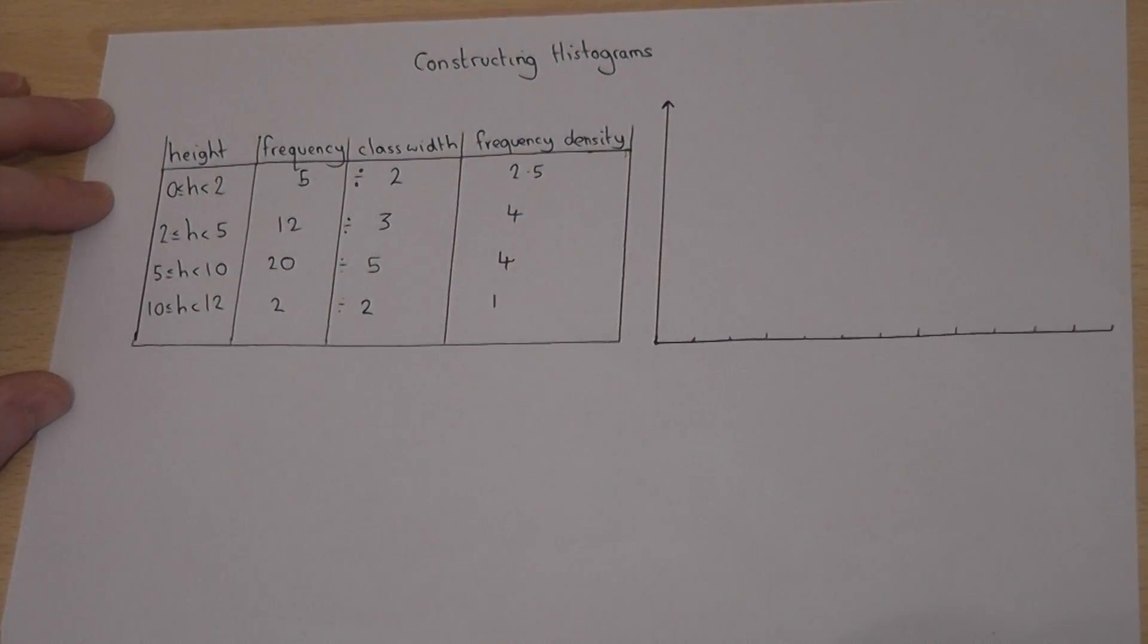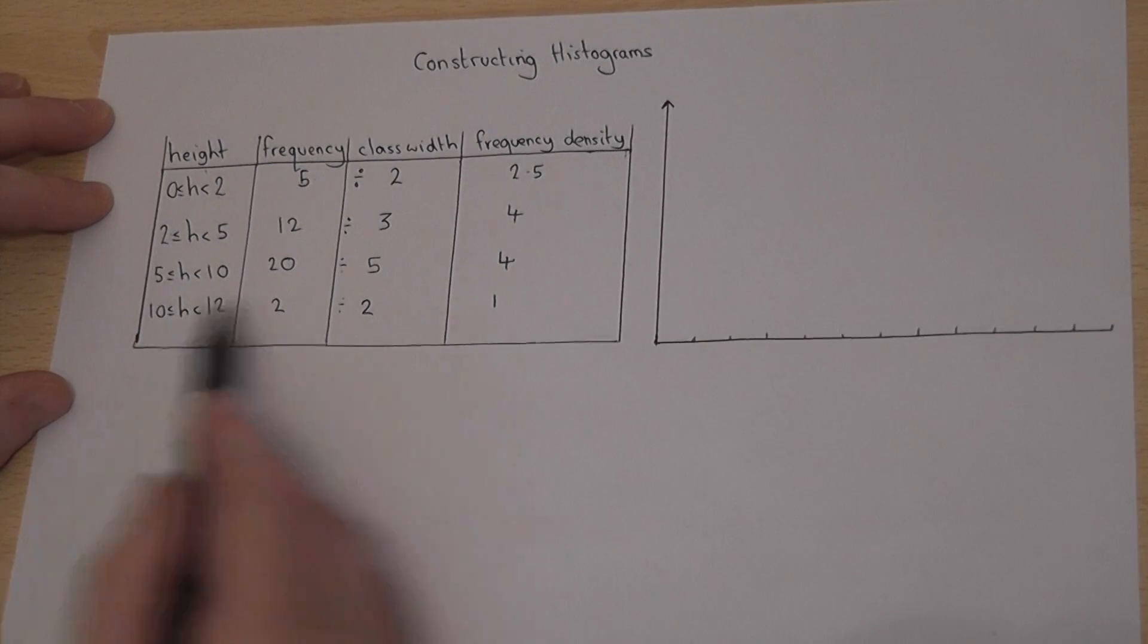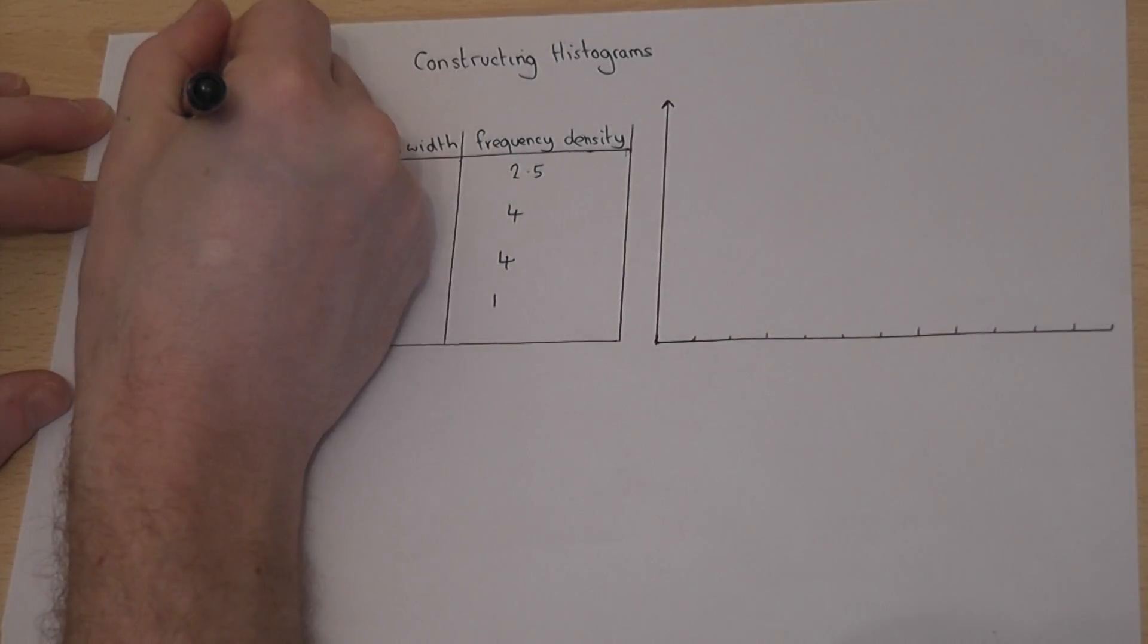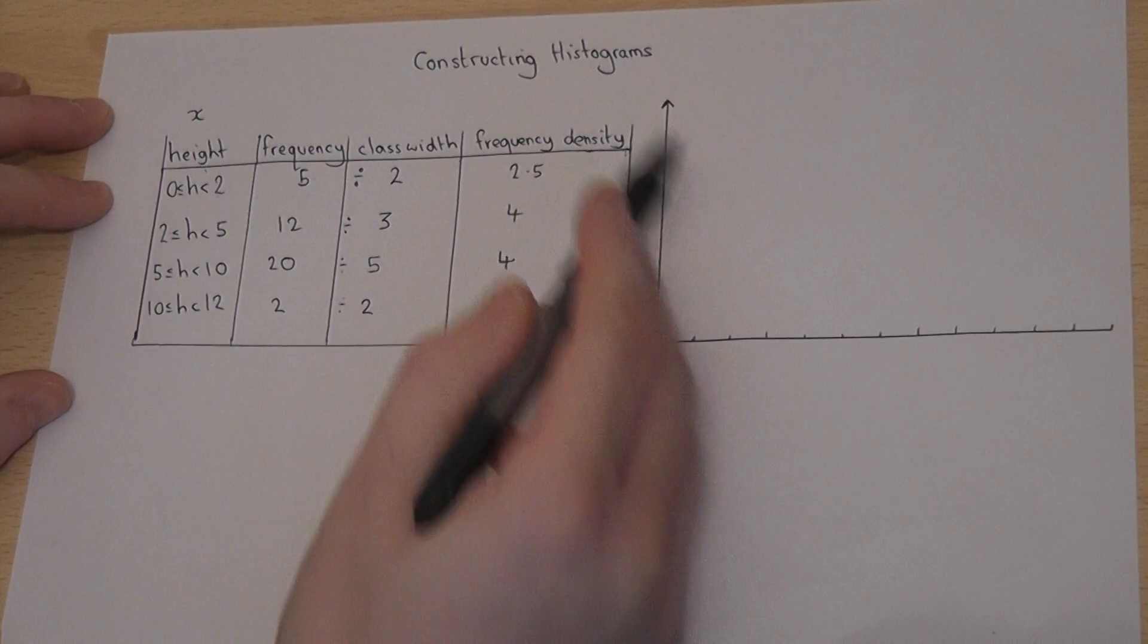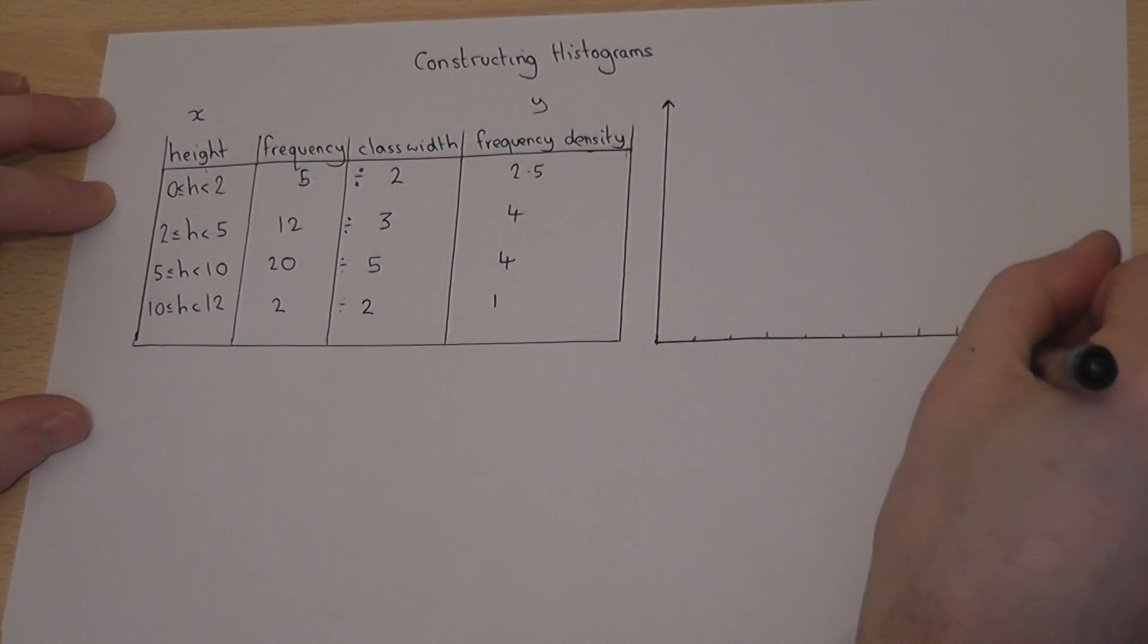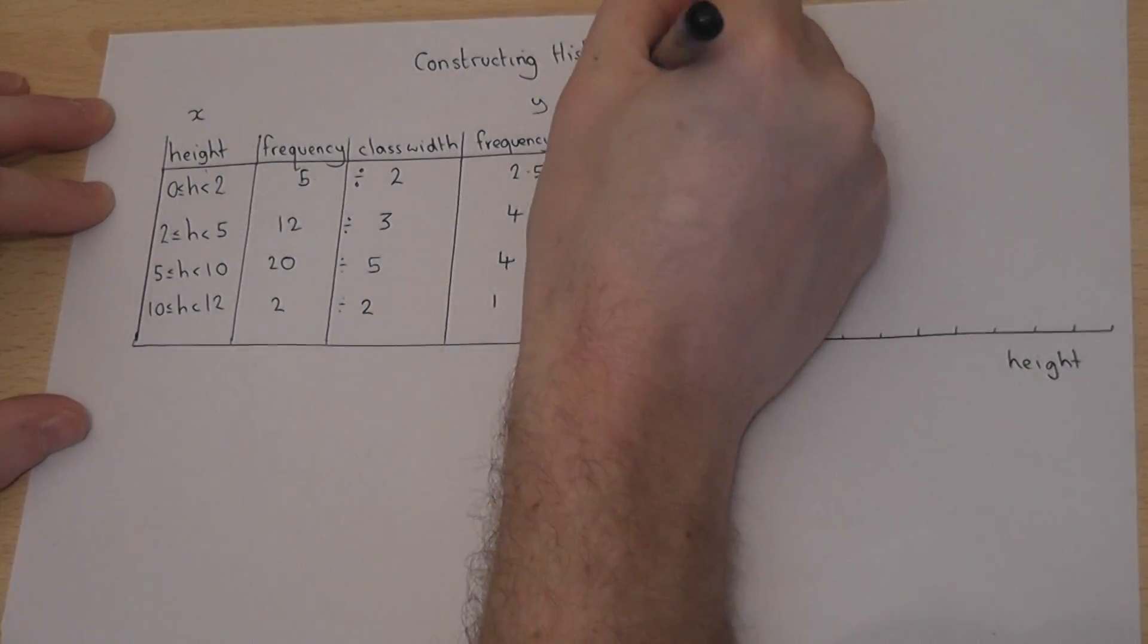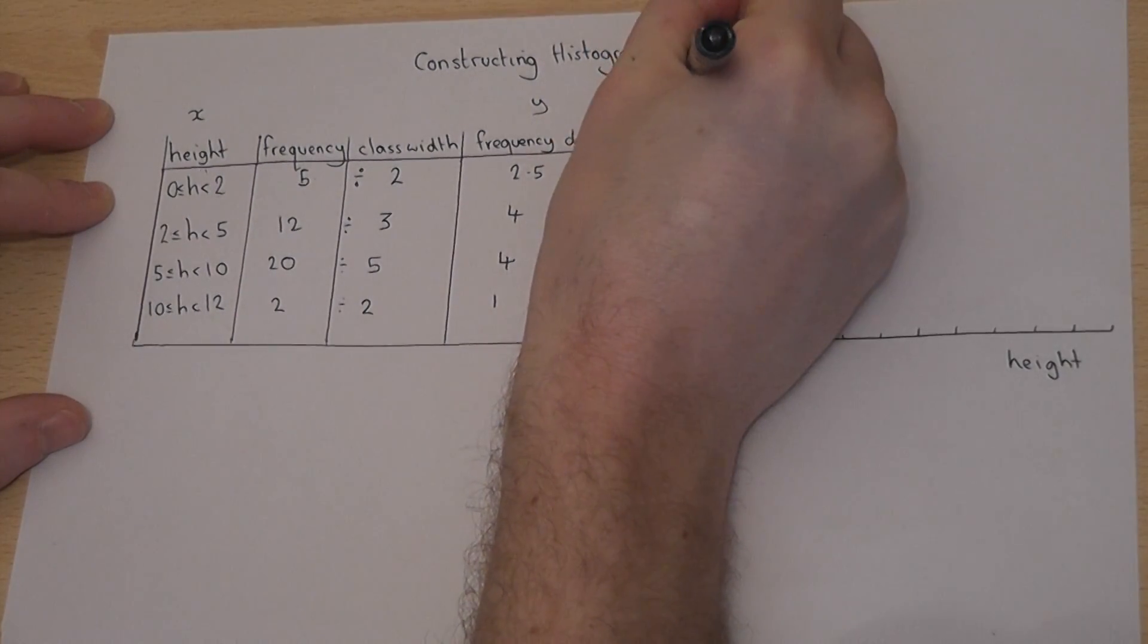To construct the histogram we have to plot the height on the x-axis and the frequency density on the y-axis. So here's my height, there's no units, and this is frequency density.